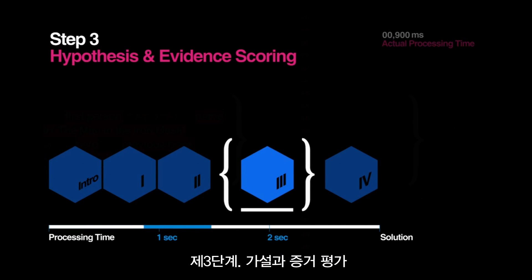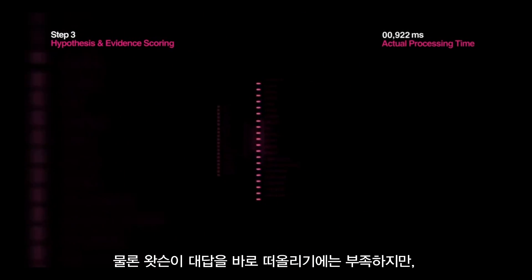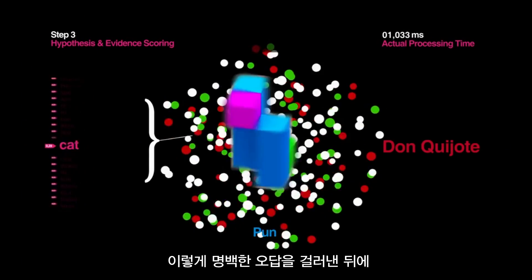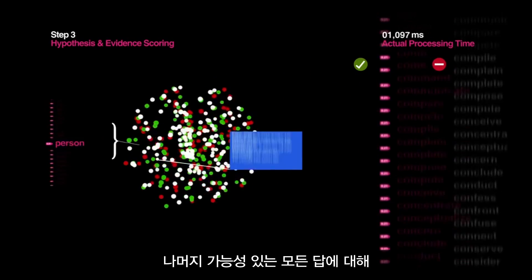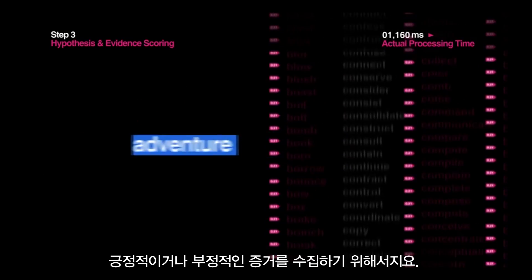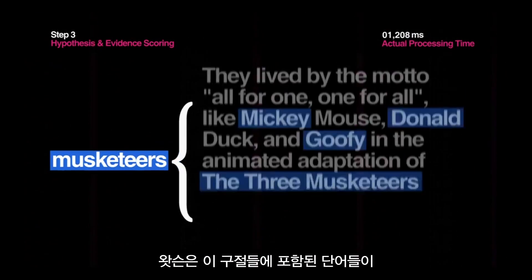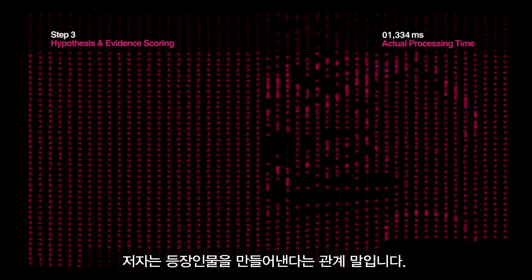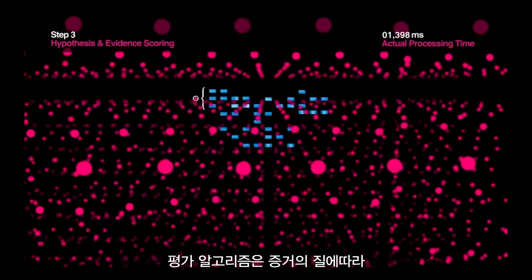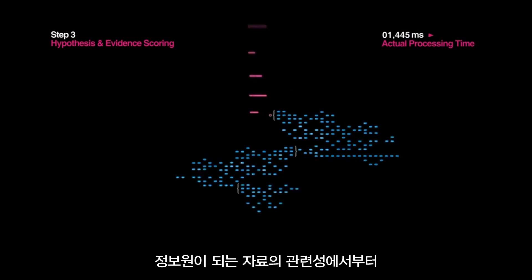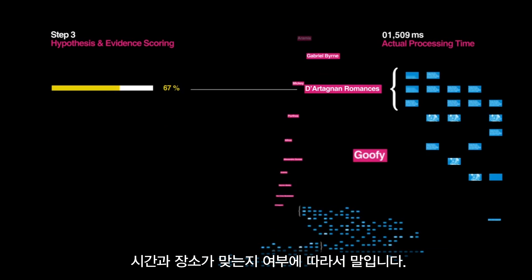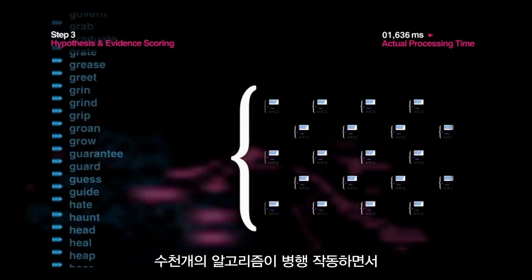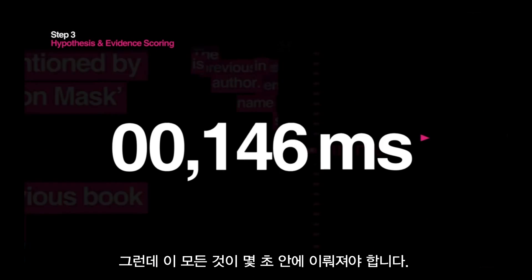Step 3: Hypothesis and Evidence Scoring. It's not enough for Watson to just come up with answers — it has to support and defend them. So after downgrading obviously wrong answers, Watson finds passages from many different sources to collect positive and negative evidence for all remaining possibilities. Watson understands these passages having learned the relationships between words — such as 'books have heroes' or 'authors create characters.' Scoring algorithms rate the quality of this evidence based on the source material's reliability and whether the time and location appear correct. Thousands of algorithms work in parallel to score the evidence for each answer — and remember, this must happen in seconds.